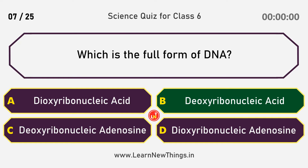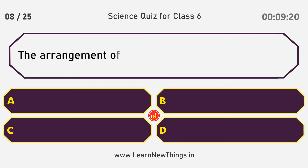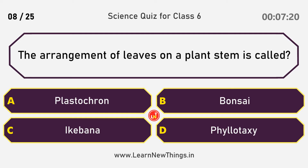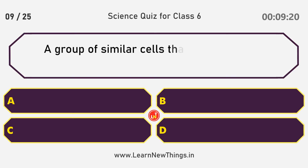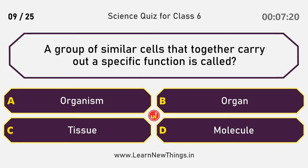Deoxyribonucleic acid. The arrangement of leaves on a plant's stem is called Phyllotaxy. A group of similar cells that together carry out a specific function is called Tissue.